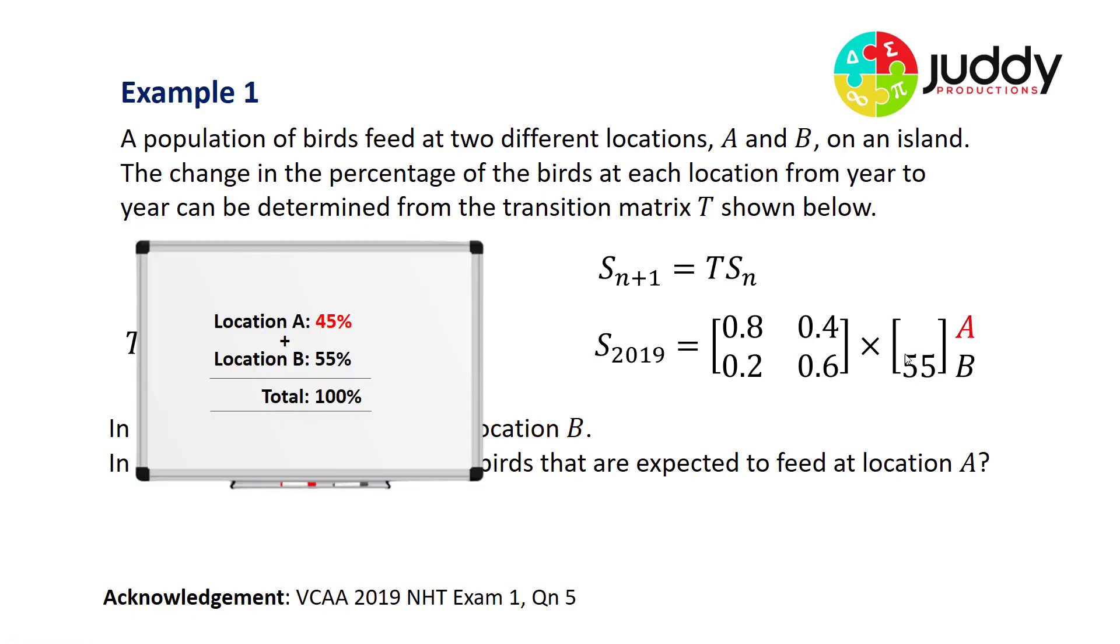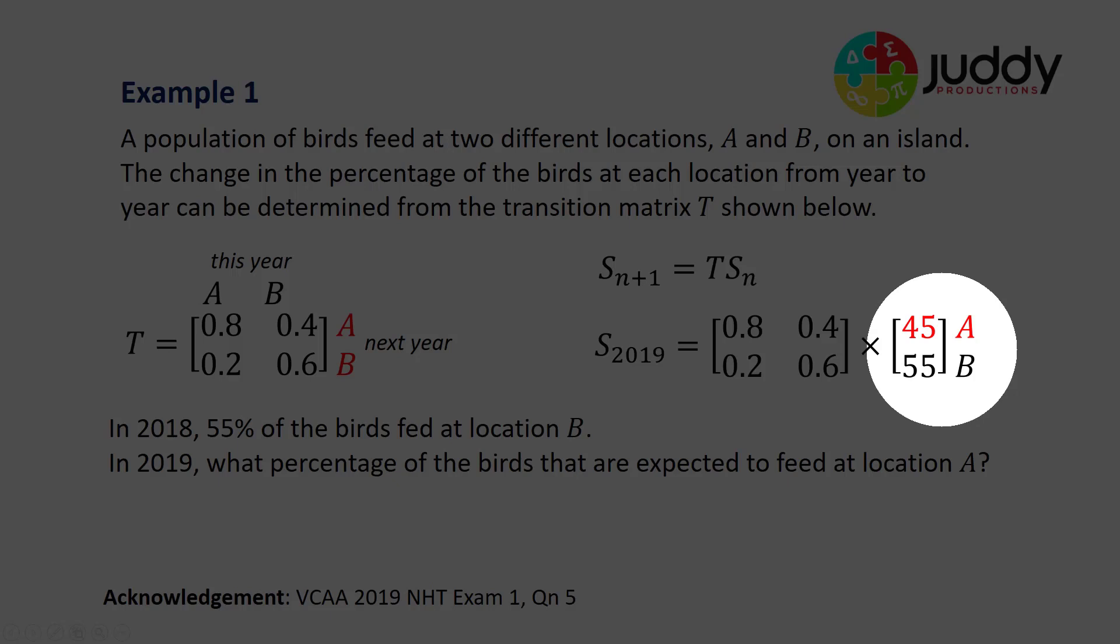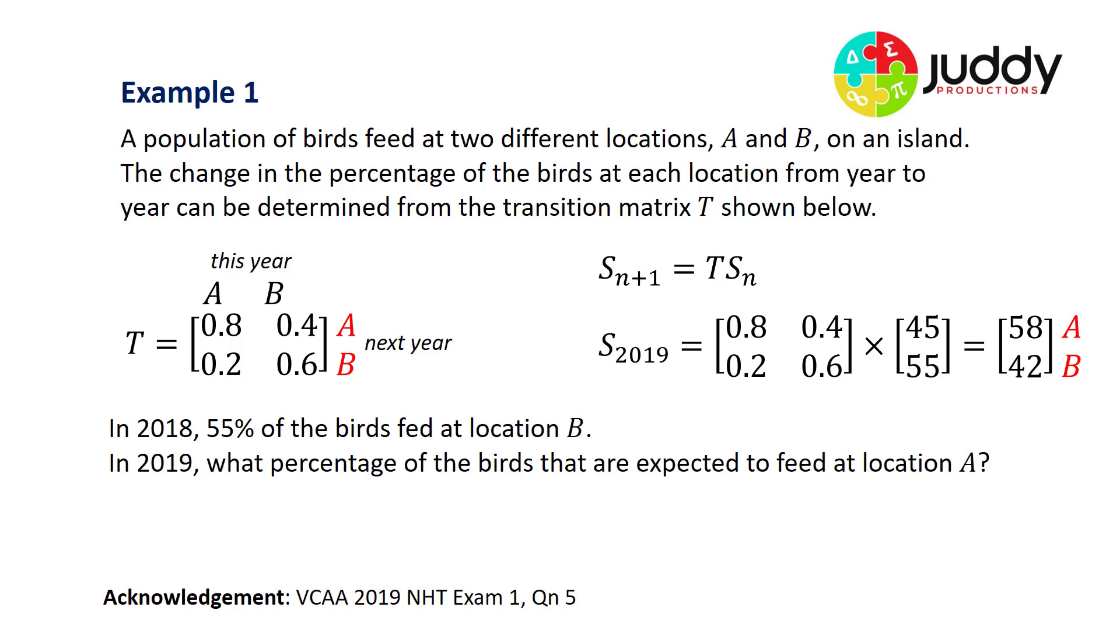Now logically, if we've got 55% of our birds feeding at location B on the island, we must add up to 100% in our matrix. So that leaves us with 45% of birds at location A. So we multiply the two matrices and read them in the same vertical order as the transition matrix. Our answer is that in 2019, 58% of the birds are expected to feed at location A.